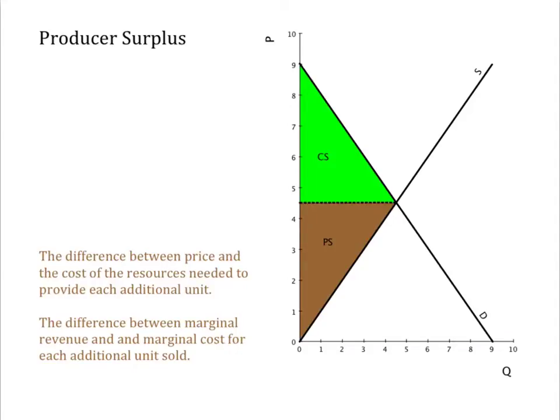But what generates producer surplus and how does it relate to underlying production costs? We'll start with a more precise definition. Producer surplus is the difference between marginal revenue and marginal cost for each additional unit sold.